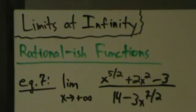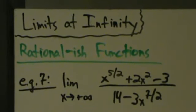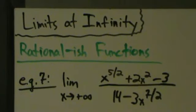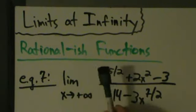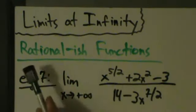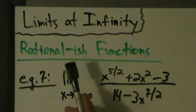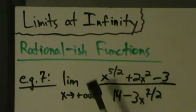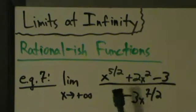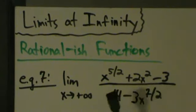Hey guys, let's go ahead and continue our discussion with limits at infinity. So we talked a little bit about rational functions, and we talked about the shortcut for doing limits at infinity with rational functions, but now we're going to talk about rational-ish functions. Rational-ish is not really an official term, but what it means is functions that are kind of like rational functions, but not quite exactly rational.